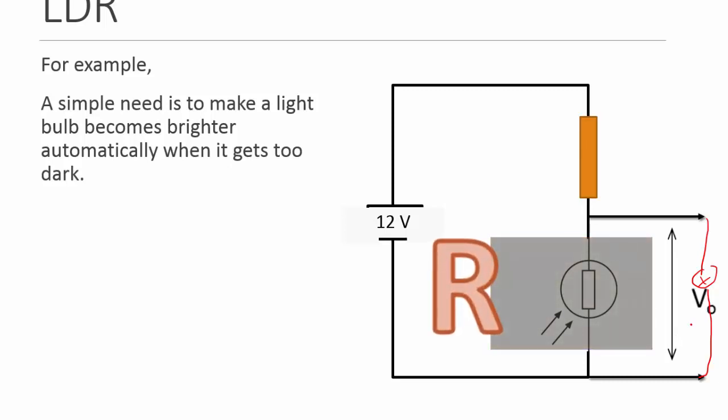When the room gets dark, remember the resistance gets larger. And based on what we learned about potential divider rule, the voltage also gets larger. And that will automatically make the light bulb go brighter.